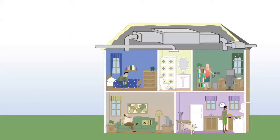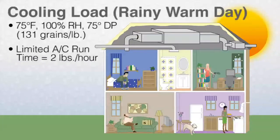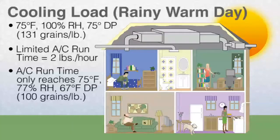The worst case scenario is that in green grass climates, we have rainy warm days mixed in with hot dry days. On a rainy warm day, assuming 75 degrees and 100% RH — it's raining — we've got a 75 degree dew point and 131 grains of moisture per pound of air that infiltrates that home, plus moisture from the occupants. The AC is running quarter time, similar to the night, removing two pounds of moisture per hour. This gets us to 75 degrees and 77% RH, a 67 degree dew point, and 100 grains per pound of the inside air — which means we've got a damp house.